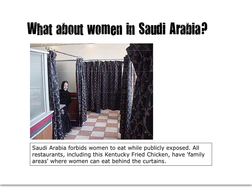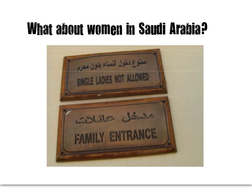Driving is one issue — here's another one. This is from a blog of a European woman living in Saudi Arabia. She says: Saudi Arabia forbids women to eat while publicly exposed. All restaurants, including this KFC, have what are called family areas where women can eat behind the curtains. Here are some of the signs into that KFC — the family entrance where the women can go. And here is the sign for single ladies: no, you're not allowed.